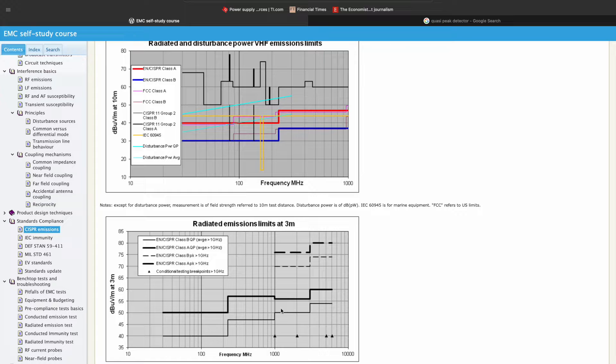You could also find limit lines that show PK, and sometimes AVG. So the average, AVG stands for average, it is a limit for average results, and PK stands for peak. So peak and average are often very easy to understand, and people often ask me what is a QP, what's the purpose of having a QP limit line.